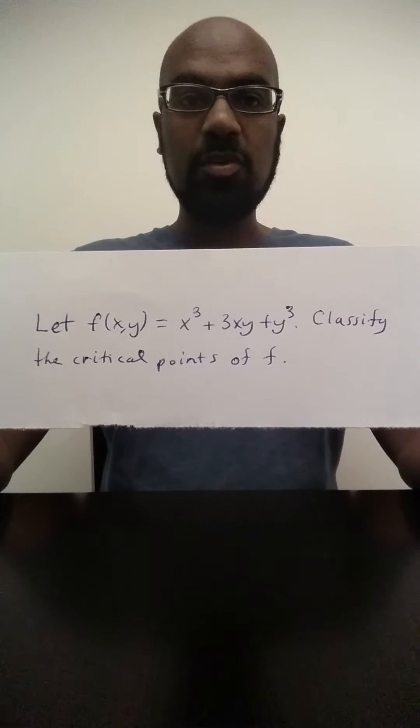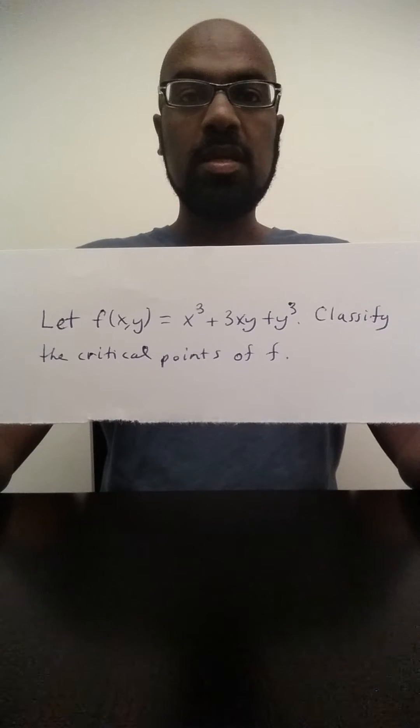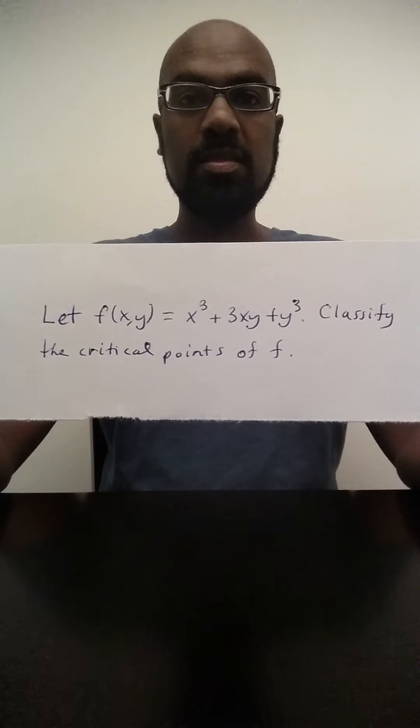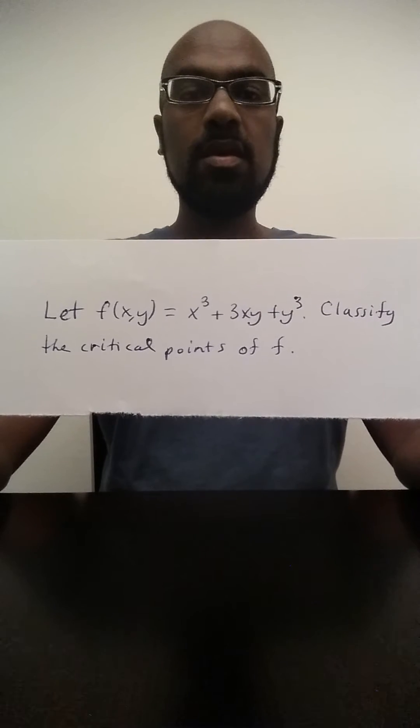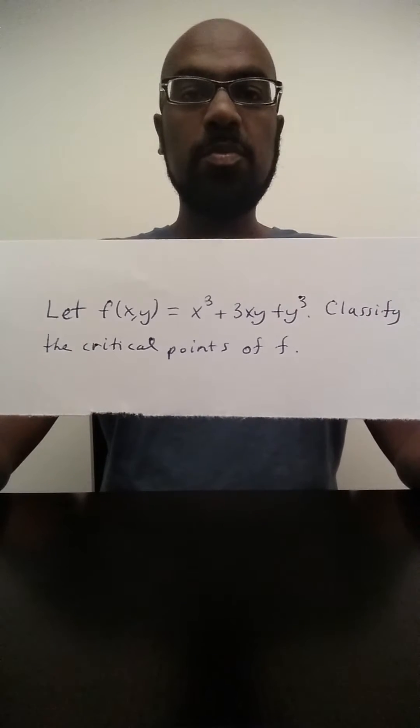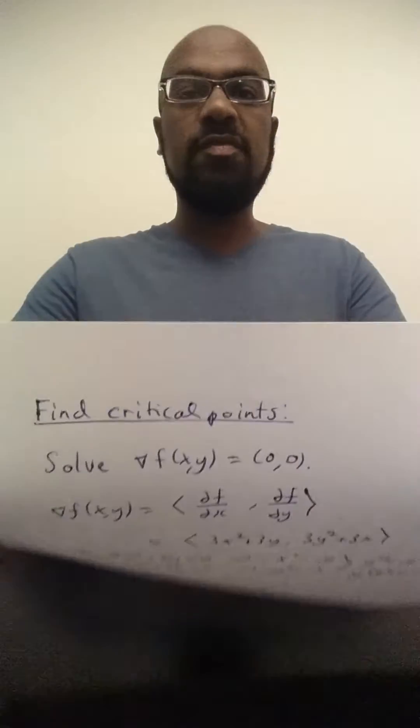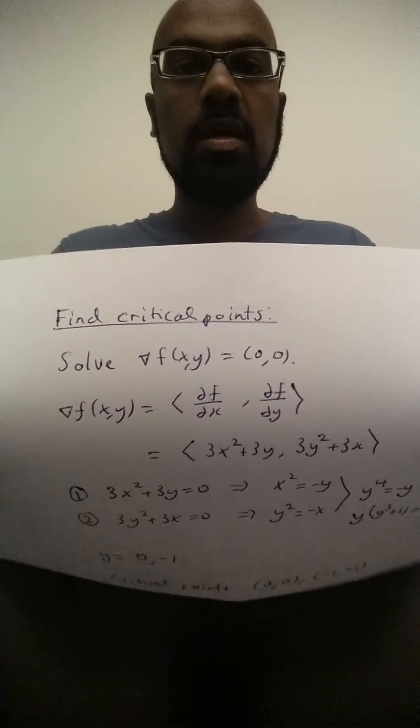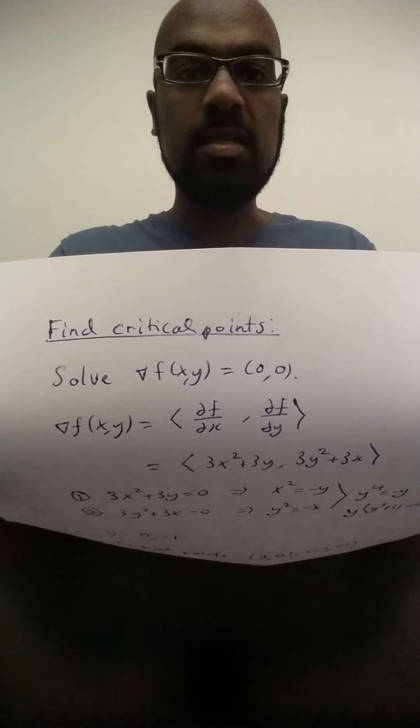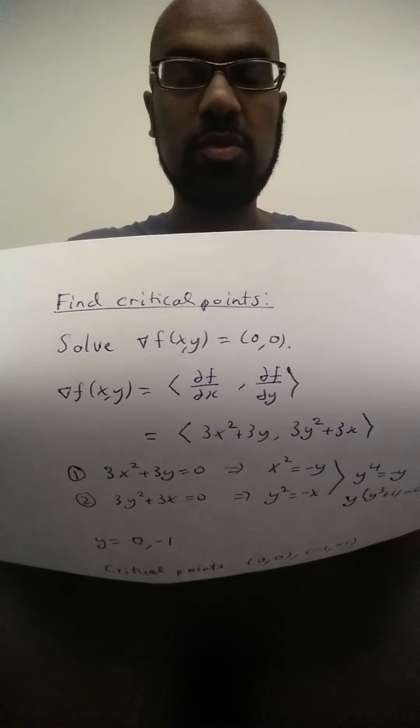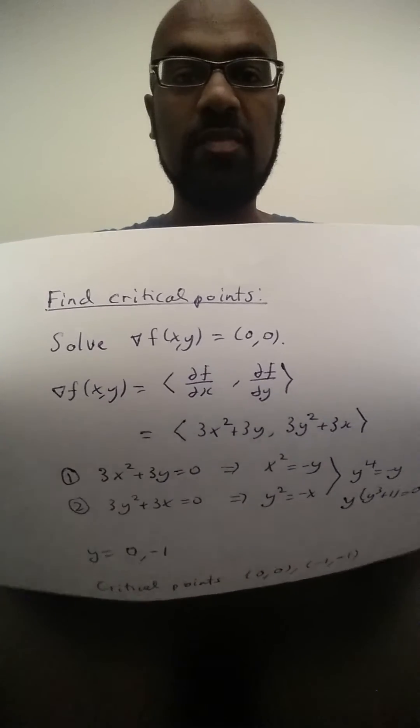Okay, so like I said, I'd like to go about this using an analogy from single variable calculus. So in single variable calculus to find the critical points you compute the derivative of f and set it to zero. Analogously, in the multi-variable case you compute the gradient and set it to zero. And remember the gradient is the vector consisting of the partial derivatives of f with respect to the given variables.